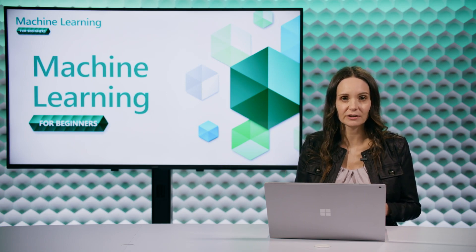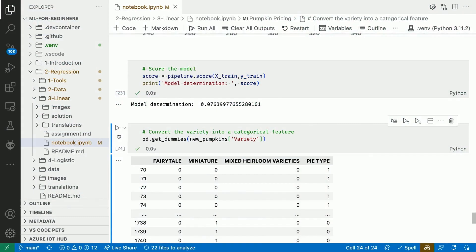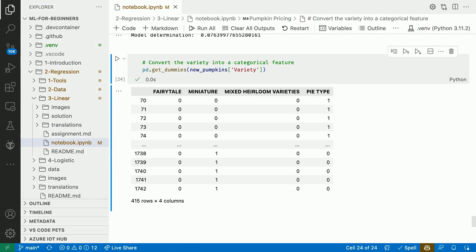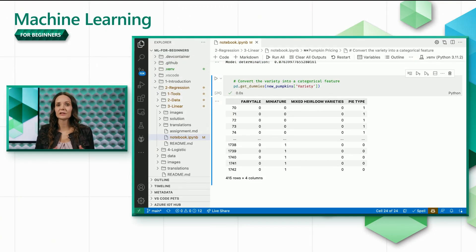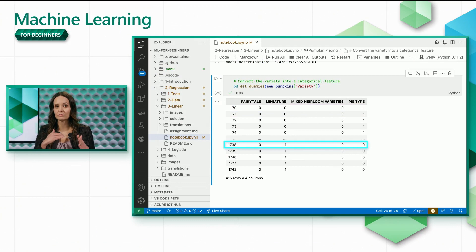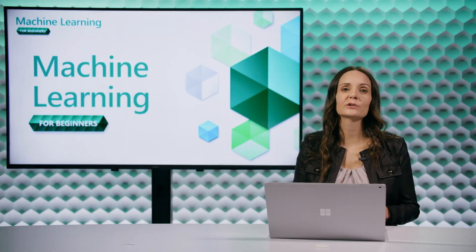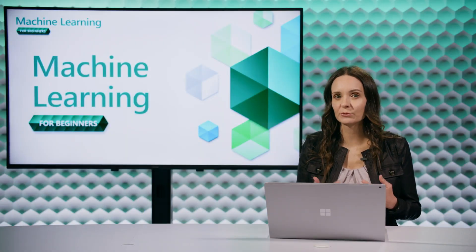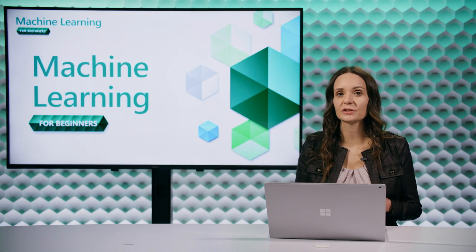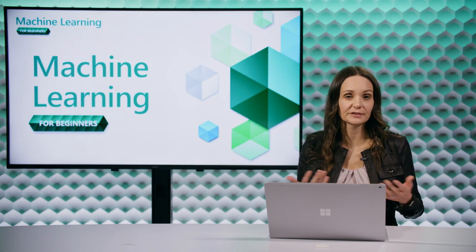One solution is to convert the pumpkin variety feature into a categorical feature, which we can do using the `get_dummies` function of the data frame. This conversion produces four columns with one-hot encodings, one for each pumpkin variety. For each batch of pumpkins represented by a row, we'll have a one in the column corresponding to the variety of those pumpkins and zeros in all the other columns. We can then try to train a linear regression model using just our newly created categorical feature as an input.